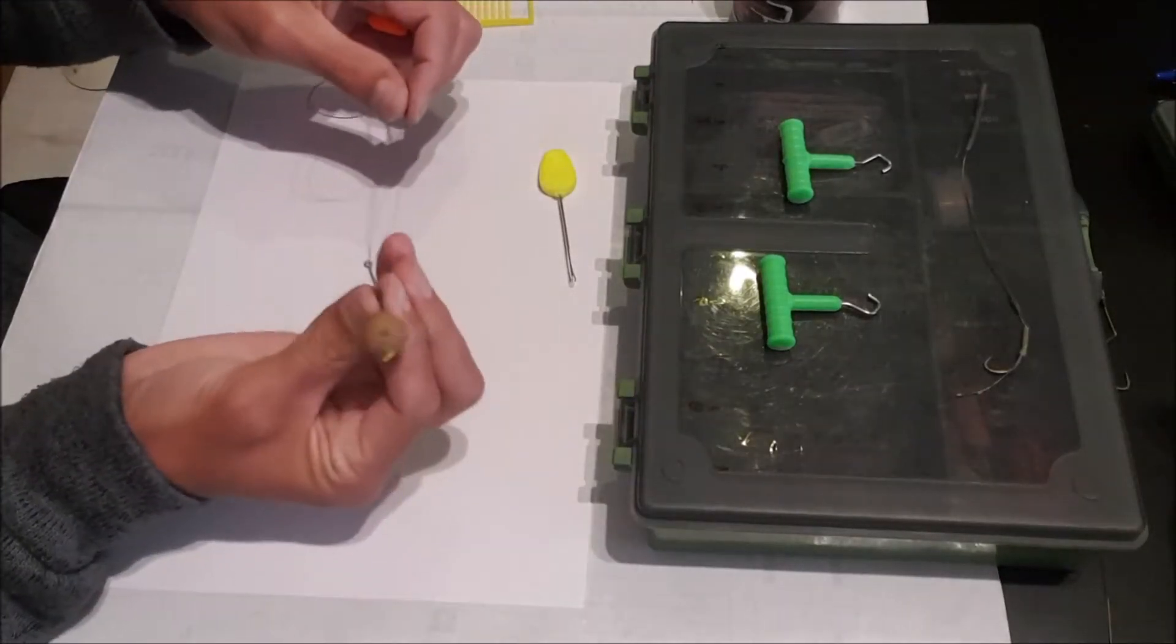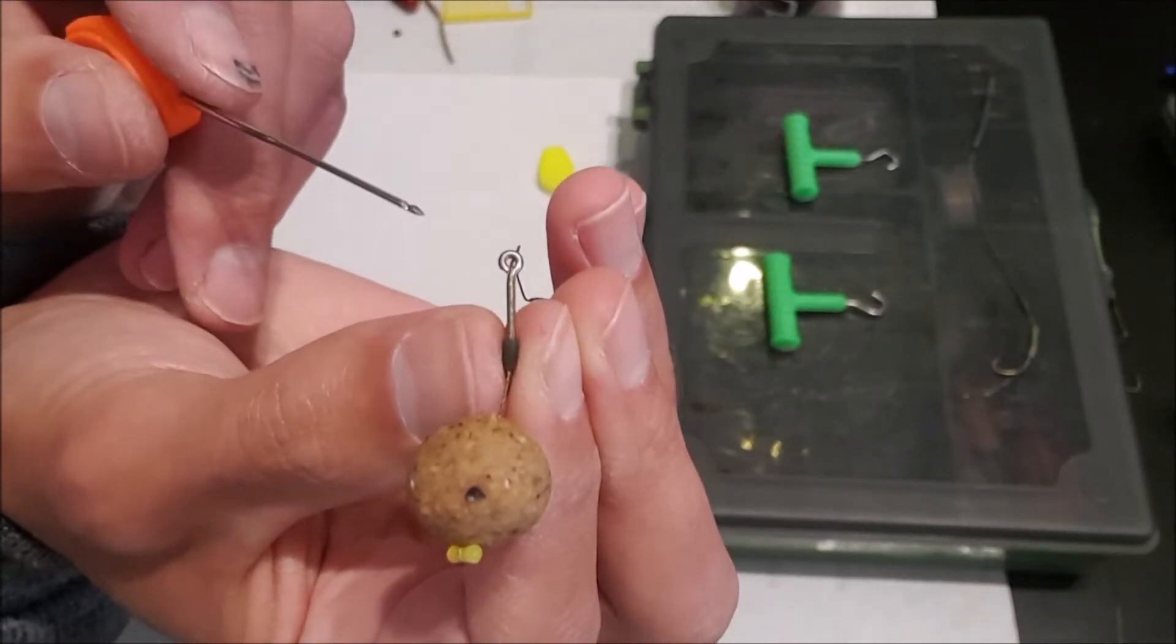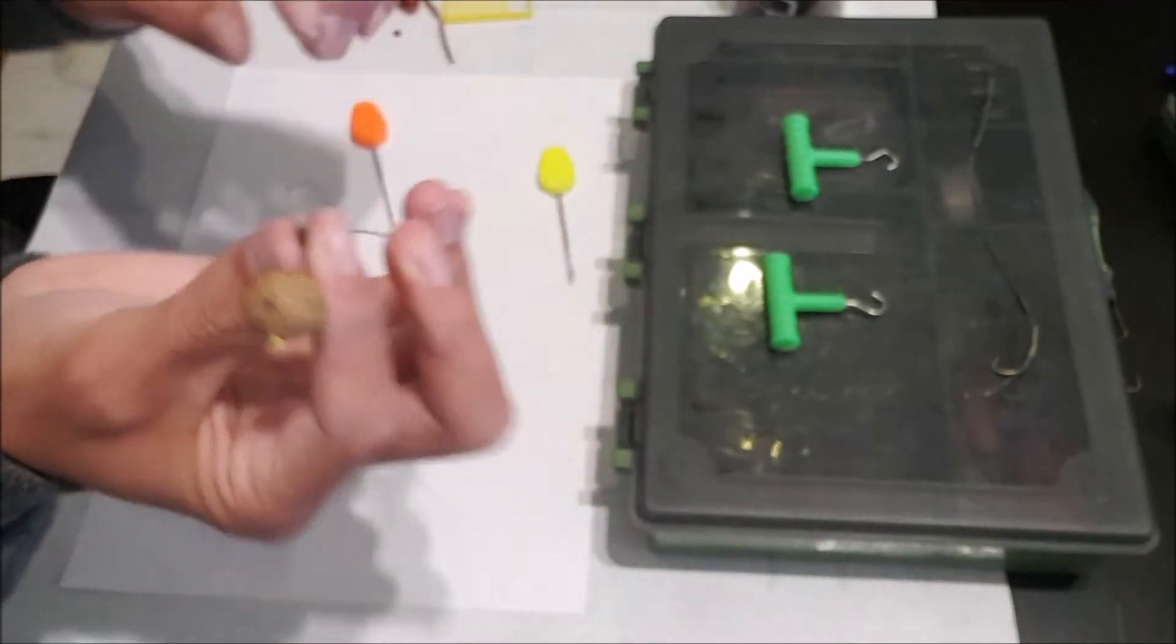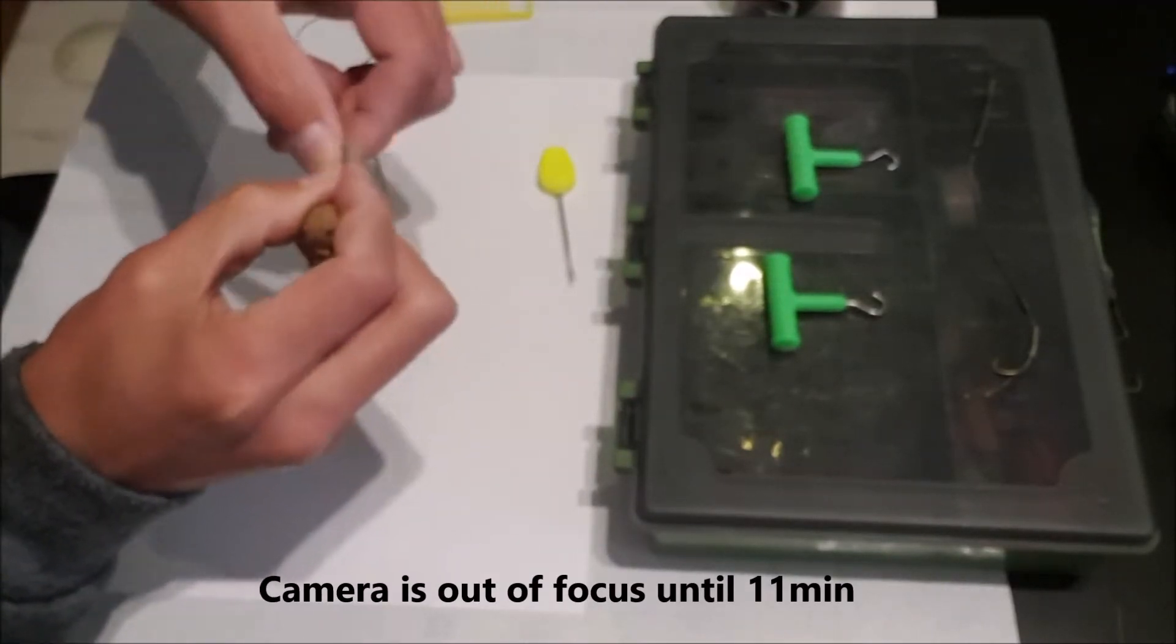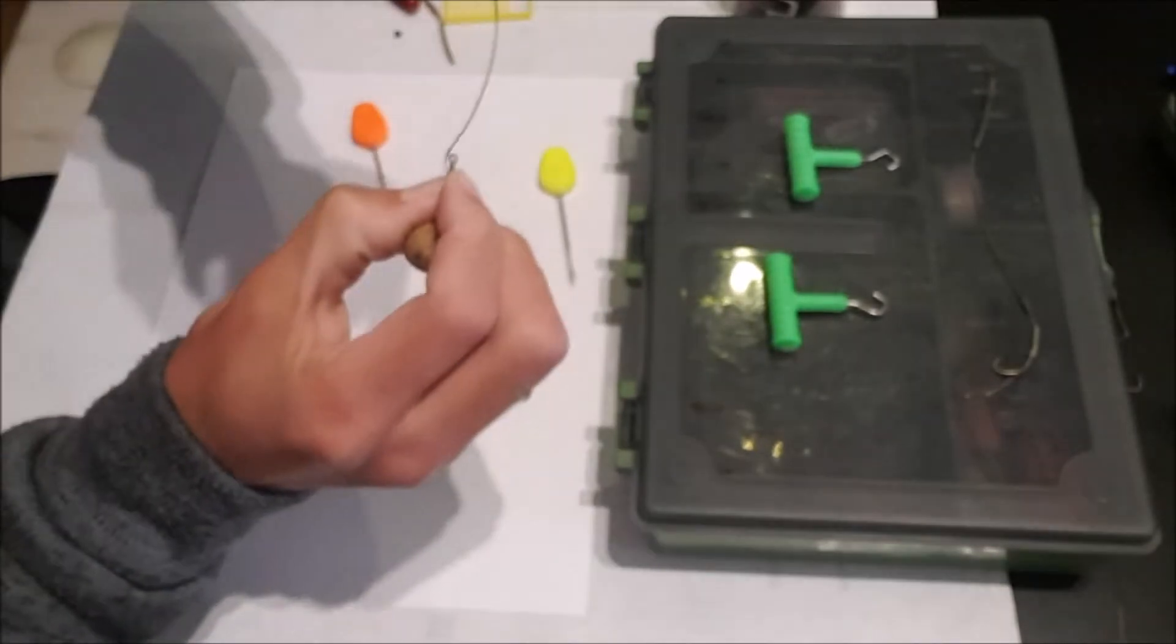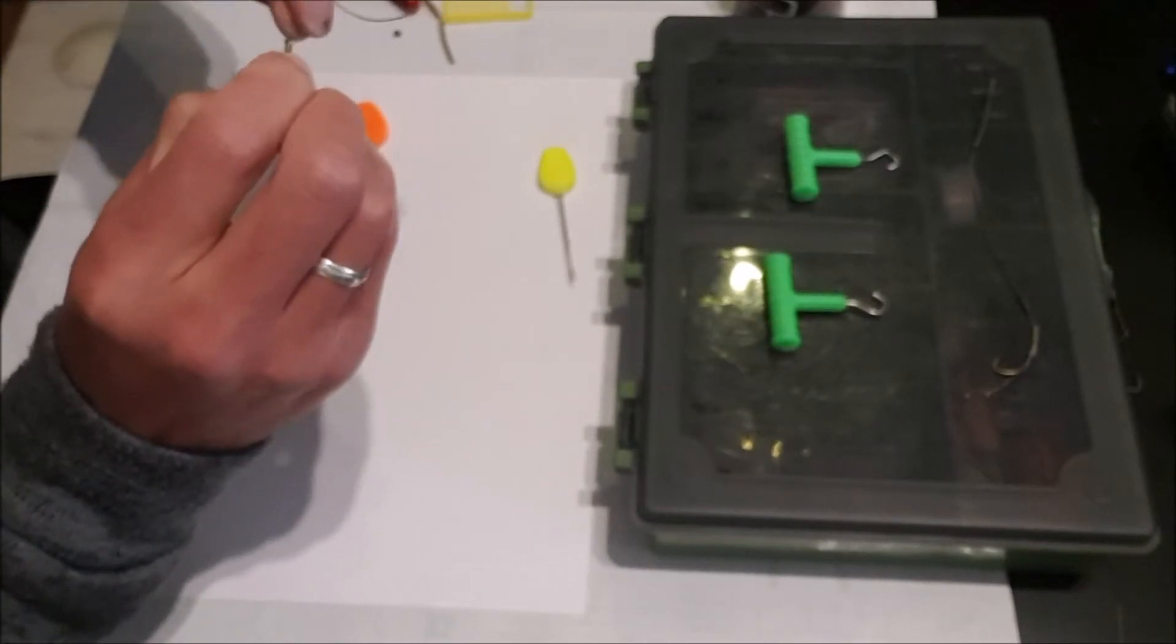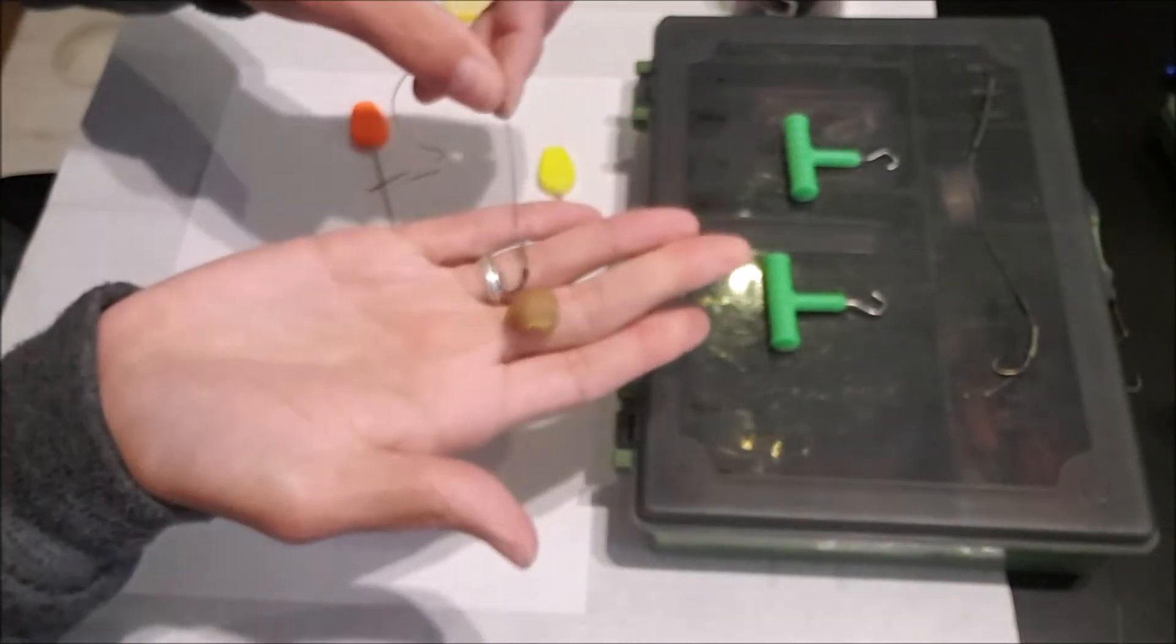So now I'm going to do a knotless knot. Just something to take note of, where the eye of the hook closes you want to do your wrap away and around. So I'm going to seven turns. One, two, three, four, five, six, seven. Back through the eye of the hook. There you have it.